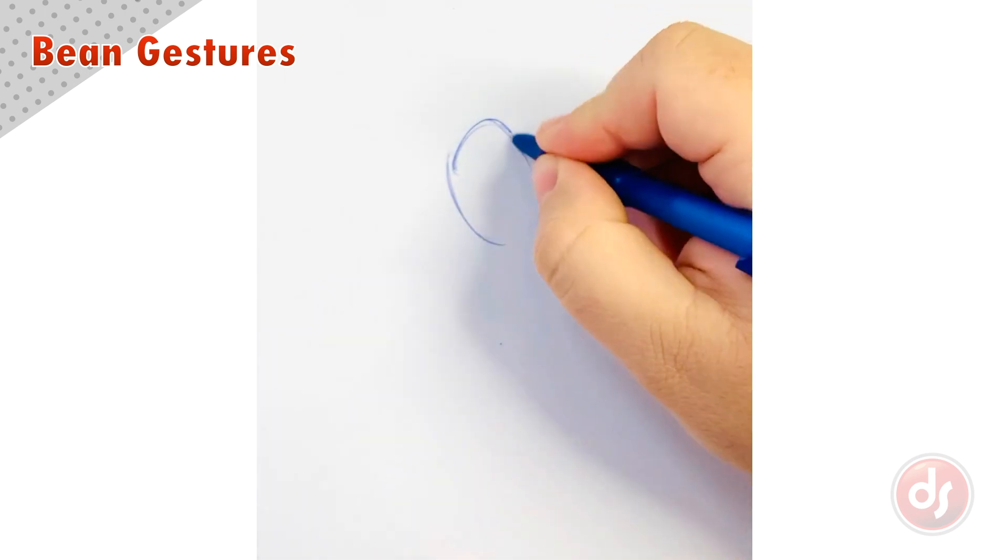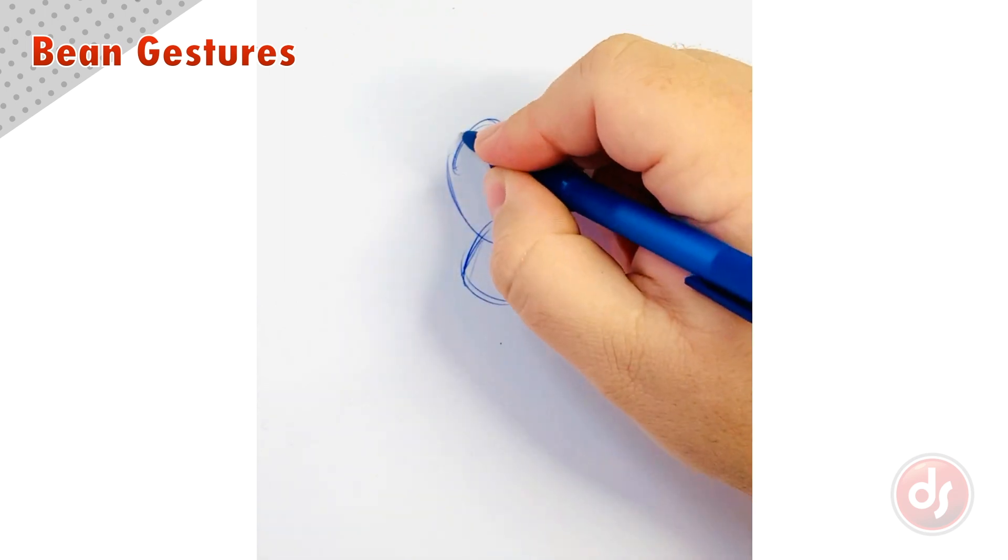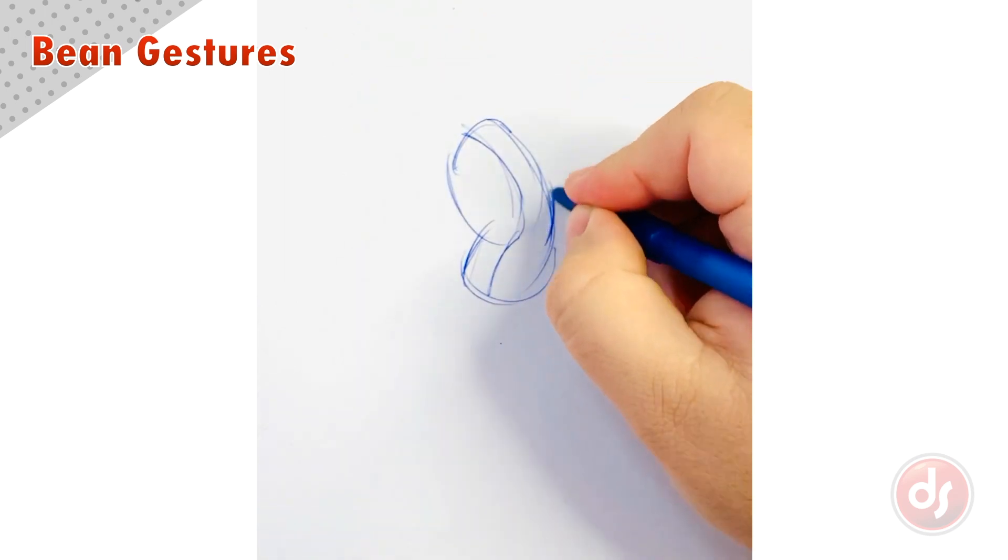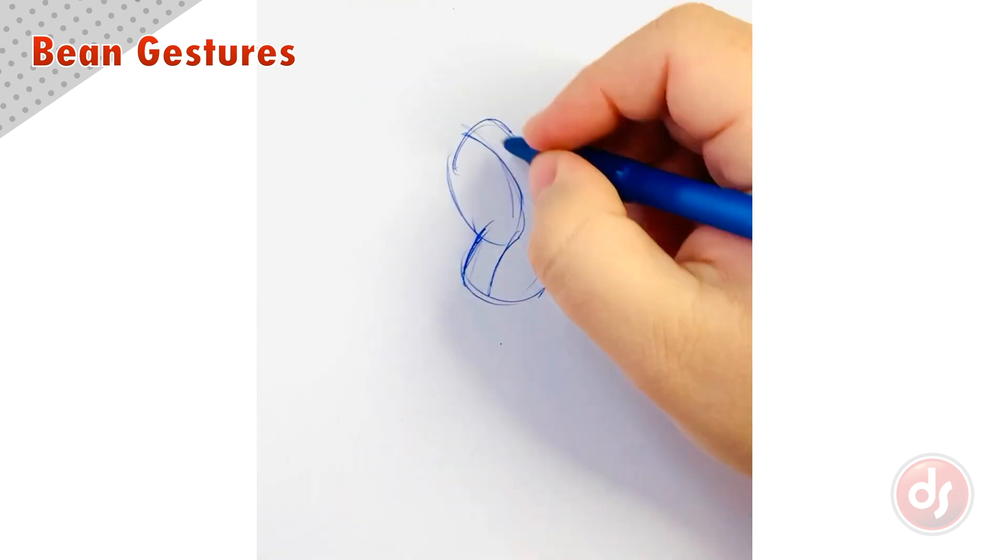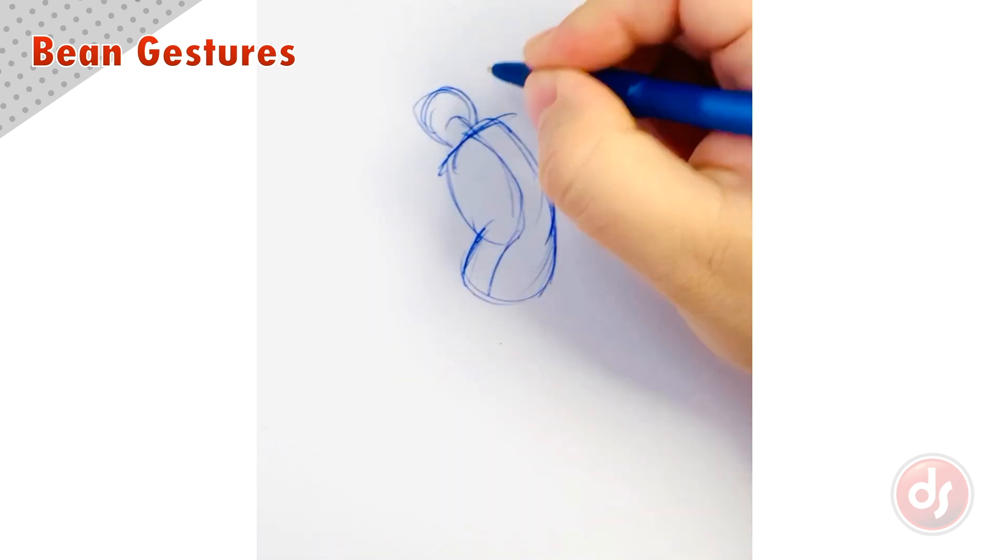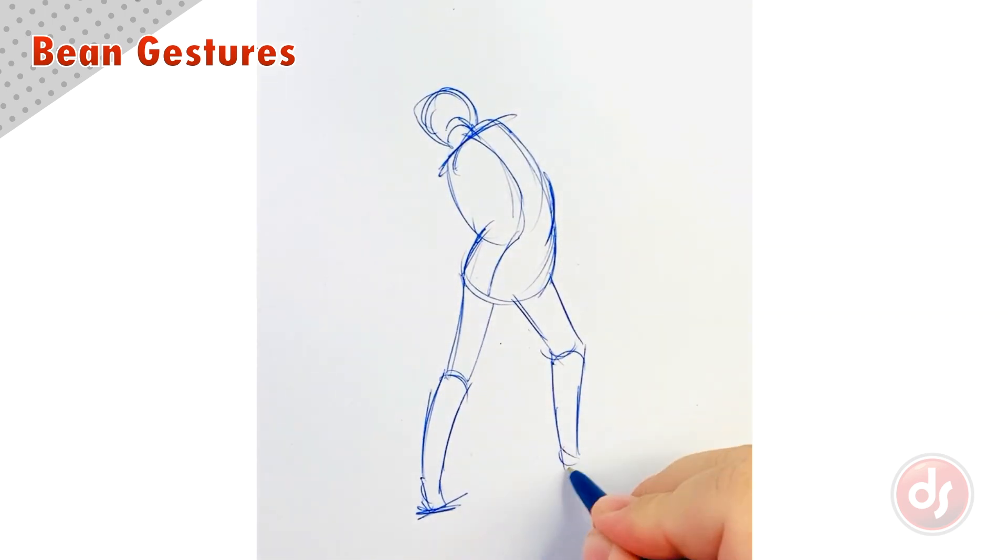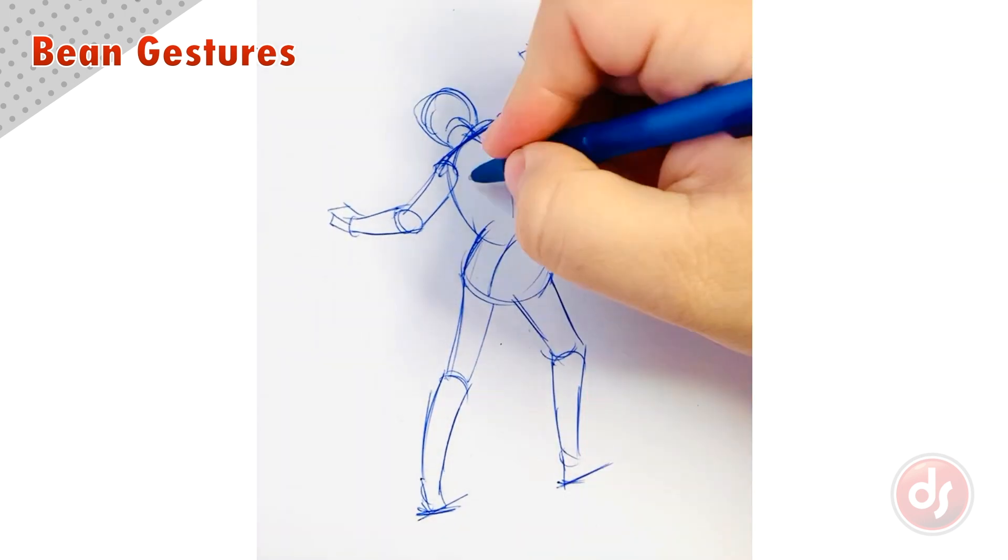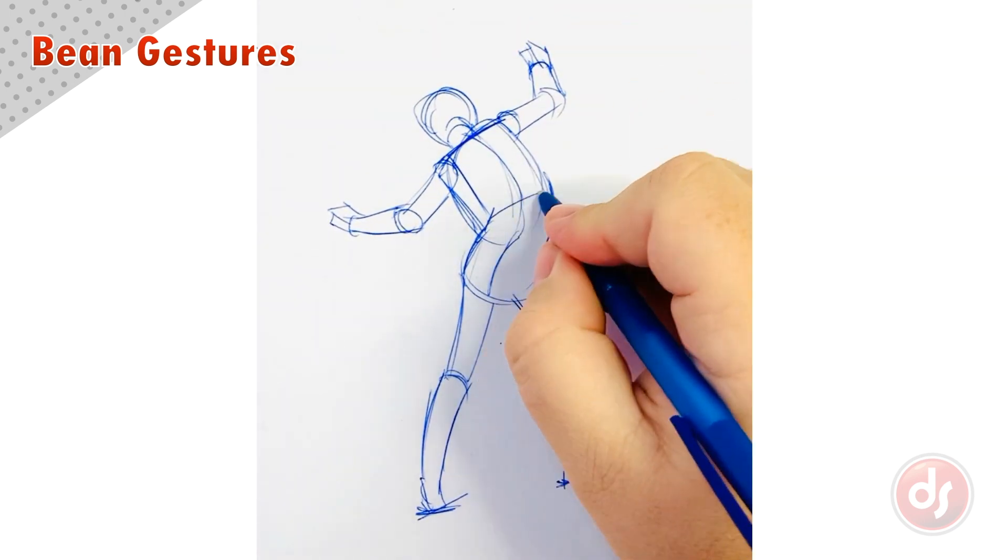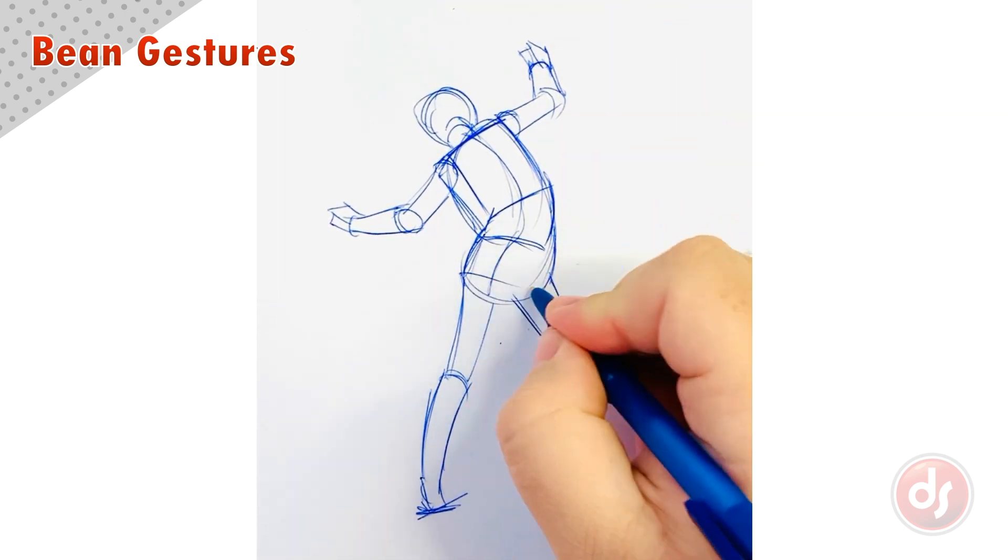Now let's do a figure with a twisting pose. I start with a bean shape and then twist the center line and make two points of overlap. When I lay in the box forms for the ribcage and pelvis, I make sure I see the right side of the ribcage and the left side of the pelvis. This creates the twist in the body.